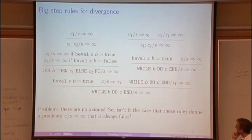But still, there's a catch. So these are inference rules, but there are no axioms. We don't say this term diverges unconditionally. And so it seems like if you have a set of inference rules, but no axioms, that they define a predicate that is always false. So c in s goes to infinity will always be false with that definition.